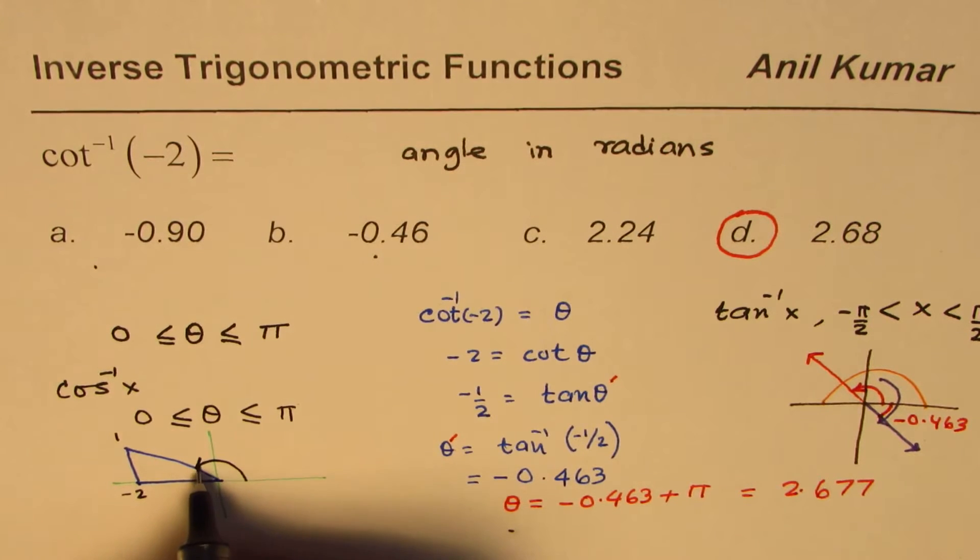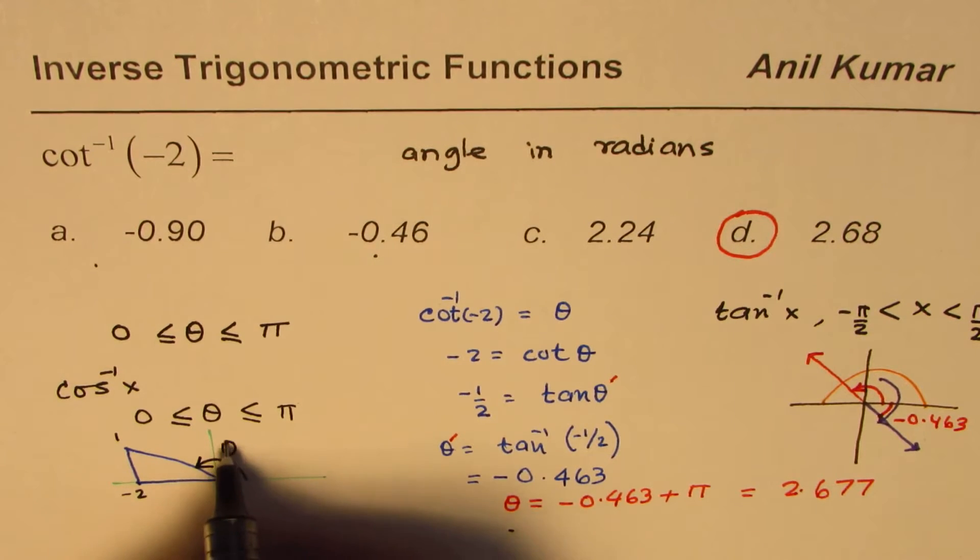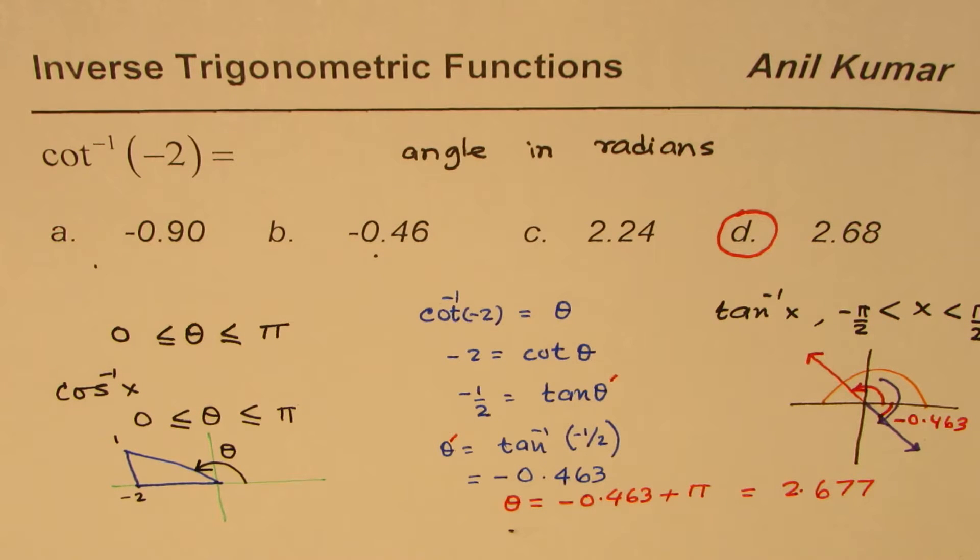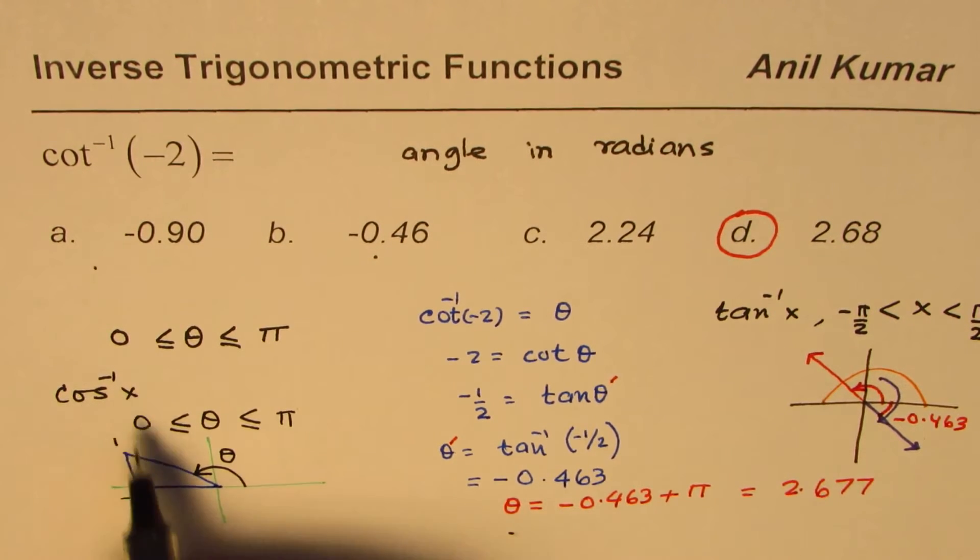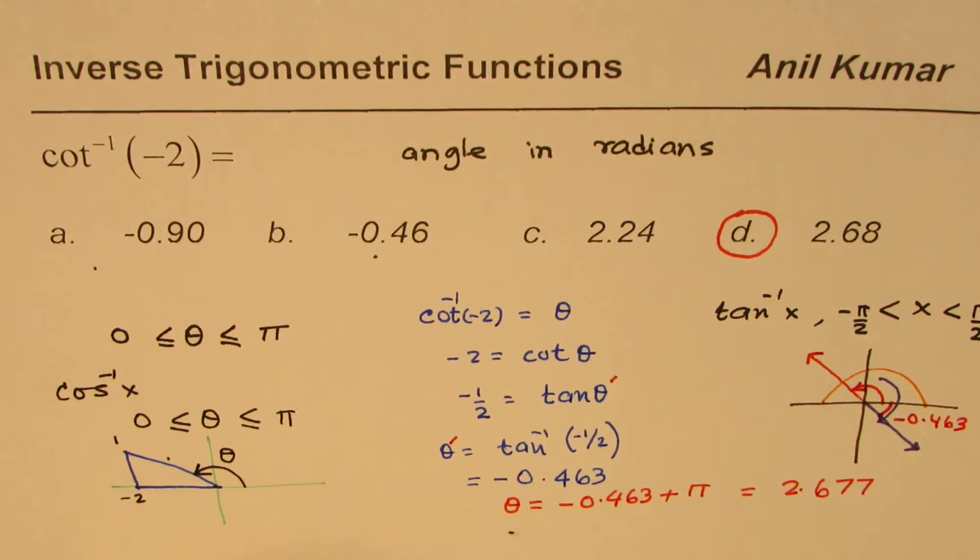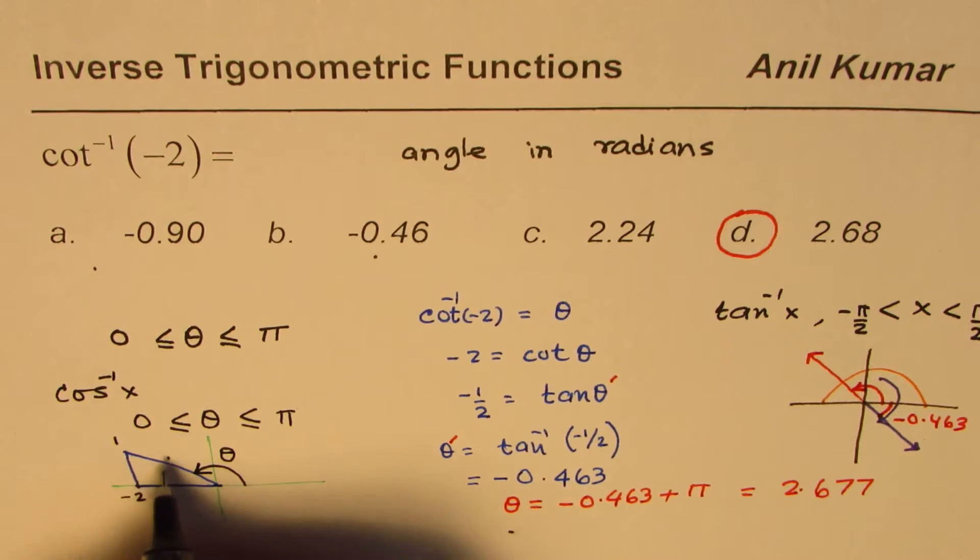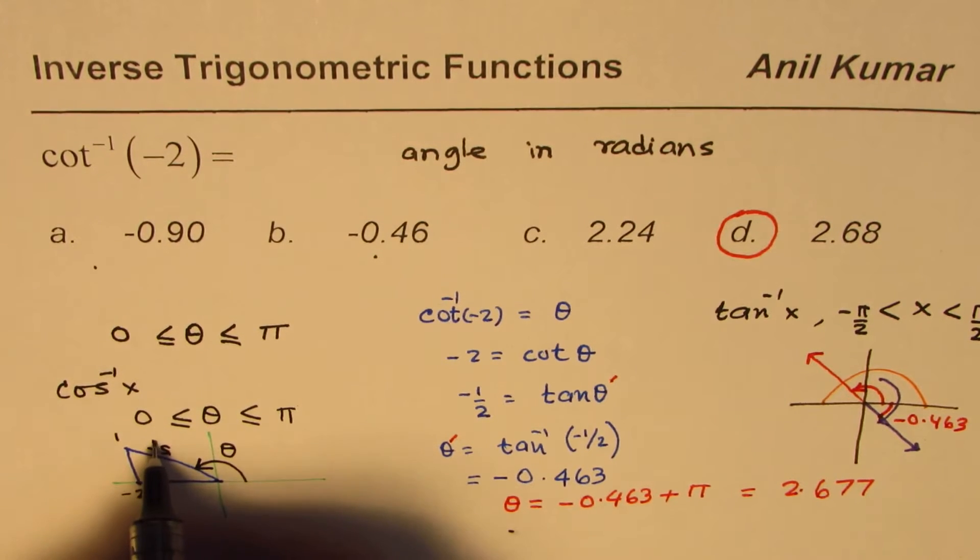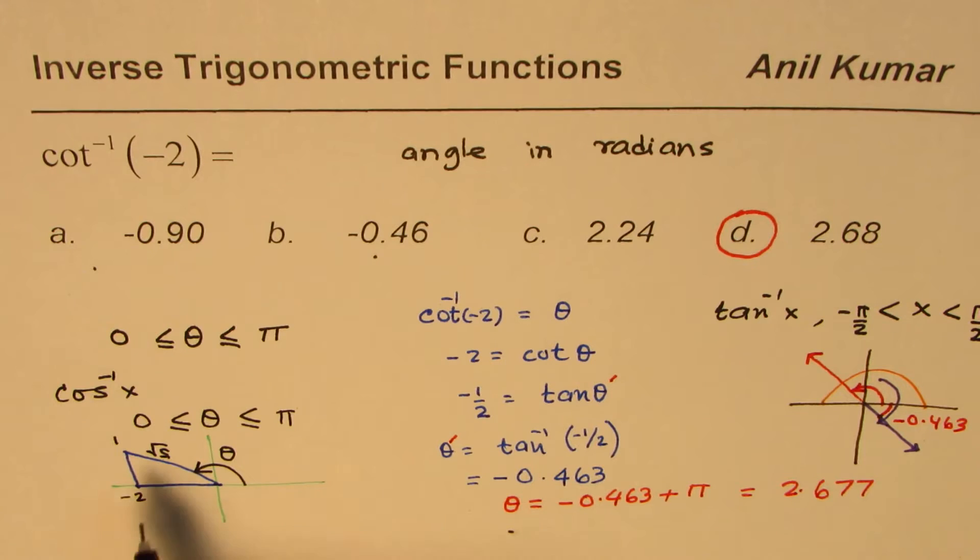So the coordinate point is one minus two one, and the angle which we're talking about is this angle theta. Is it okay? That's the angle we're talking about. Now for finding the cos inverse, you need to find what hypotenuse is, which will be this square plus that square. So 4 plus 1, 5 square root.